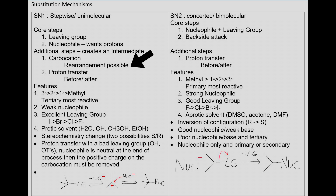You also have a proton transfer before and after. The features included in the SN1 reaction: it's going to prefer tertiary over secondary or primary. Tertiary is the most reactive in this case. It's going to want a weak nucleophile and an excellent leaving group, which includes iodine, bromine, chlorine, and fluorine.